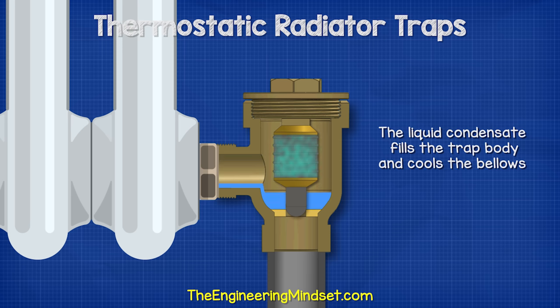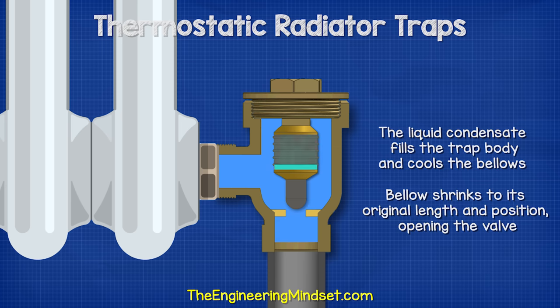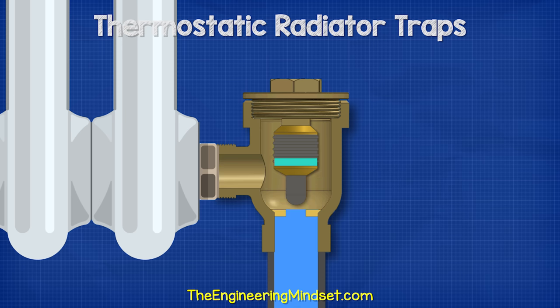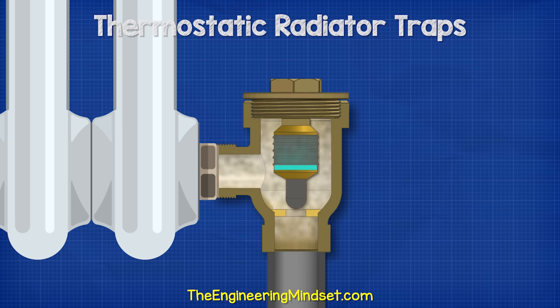The liquid condensate fills the trap body and draws heat out of the bellow. This allows the pressure inside the bellow to reduce, and the bellow shrinks to its original length and position, opening the valve. The steam then pushes the condensate out, the trap closes, and the cycle repeats.